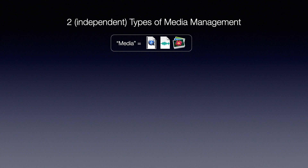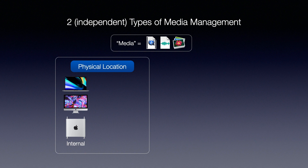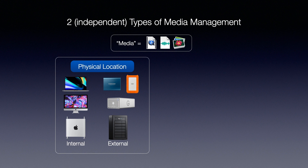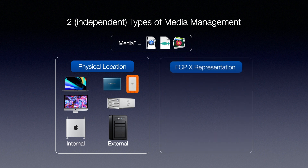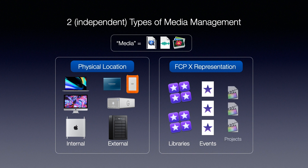The first type of media management refers to the physical location of that media. It can be located either internally on your MacBook, MacBook Pro, iMac, or Mac Pro, or externally on a connected hard drive. The other type of media management is the Final Cut Pro 10 representation of that media in libraries, in events, and in projects.